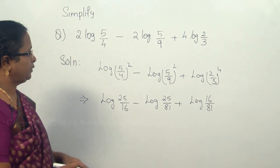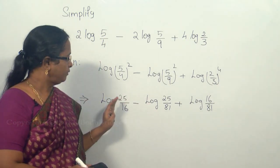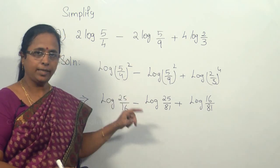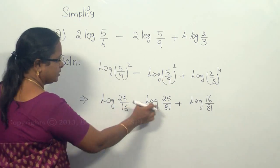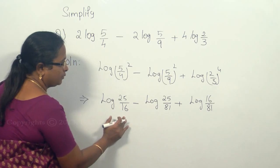Now as per the rule which is given as log of mn and log of m/n, if it is log of m/n it is log m minus log n. So you can make it so here minus is it. So this will be log of m/n rule is used here.